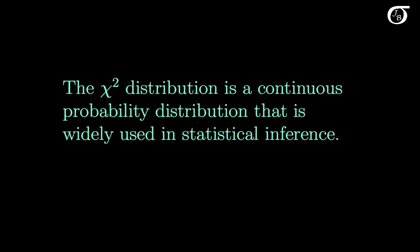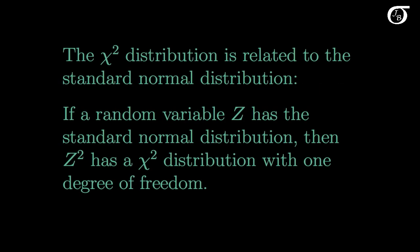The chi-square distribution is a continuous probability distribution that is widely used in statistical inference. It is related to the standard normal distribution in that if a random variable z has the standard normal distribution, then that random variable squared has a chi-square distribution with one degree of freedom.